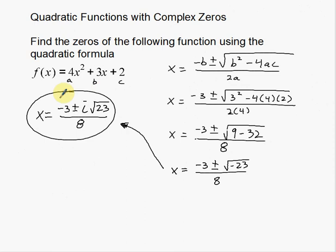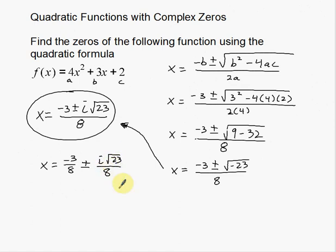That is the solution you're most commonly going to see. Another way you could write this — it's not wrong, just looks a little different — is to divide everything by 8, giving you negative three-eighths plus or minus i root 23 over 8. But that one isn't as commonly used simply because it's messy with fractions. The single-fraction form is cleaner: numerator up here, denominator down here. So those are your complex zeros — you've got real numbers like negative 3 and 8, and then imaginary numbers, i root 23. That's what makes a complex solution.